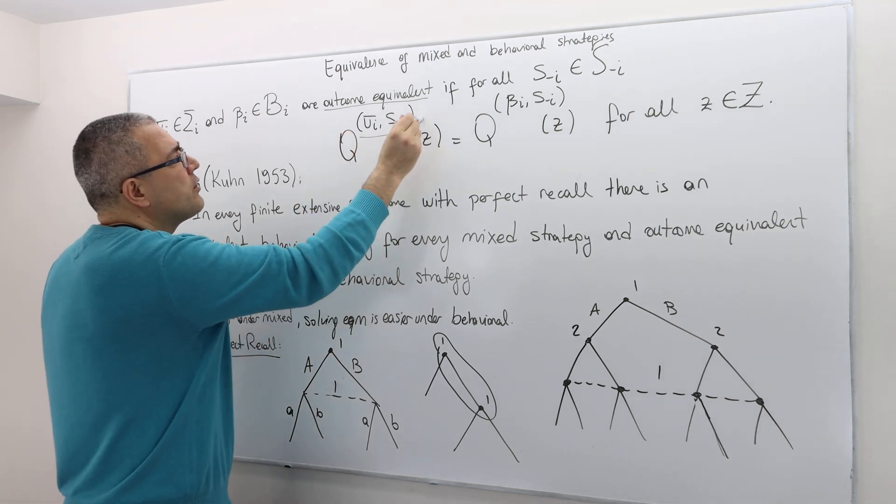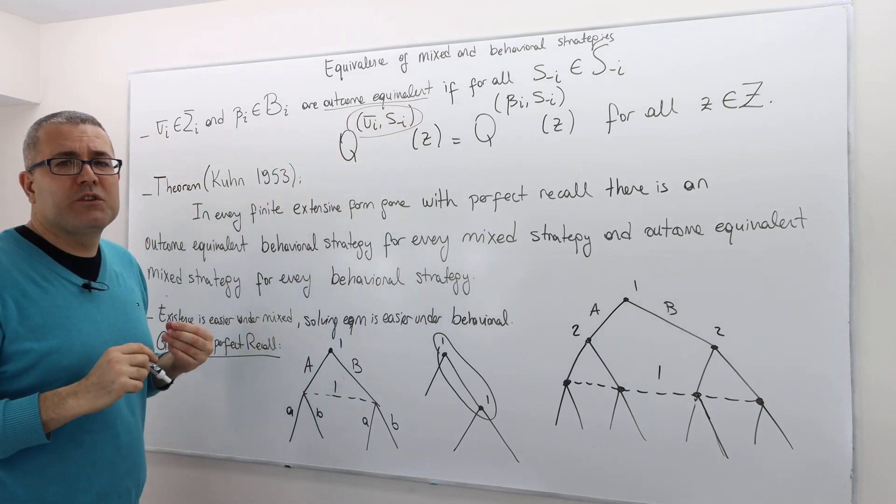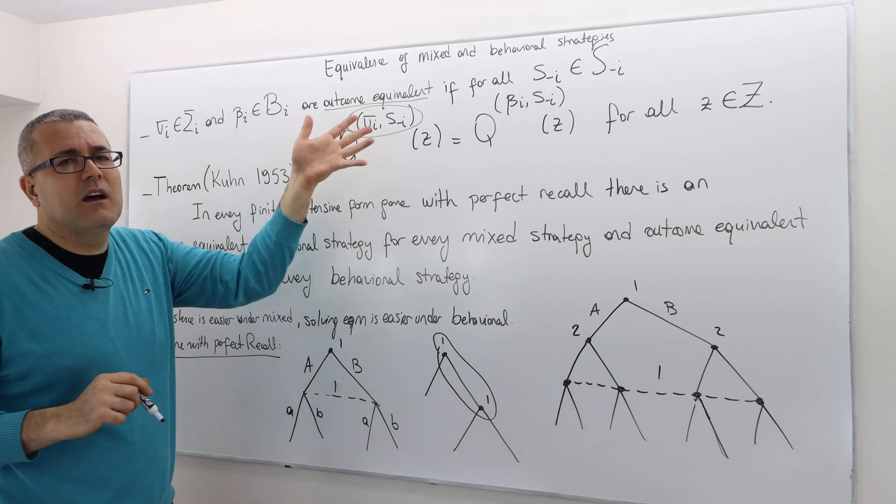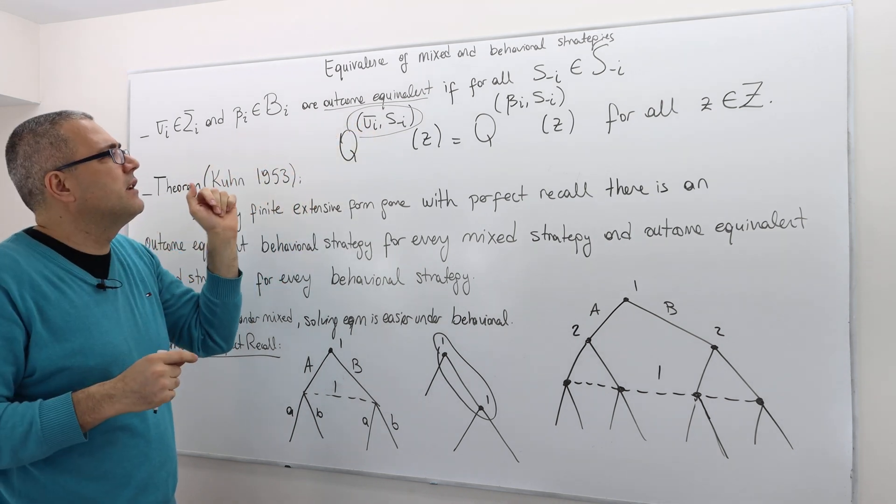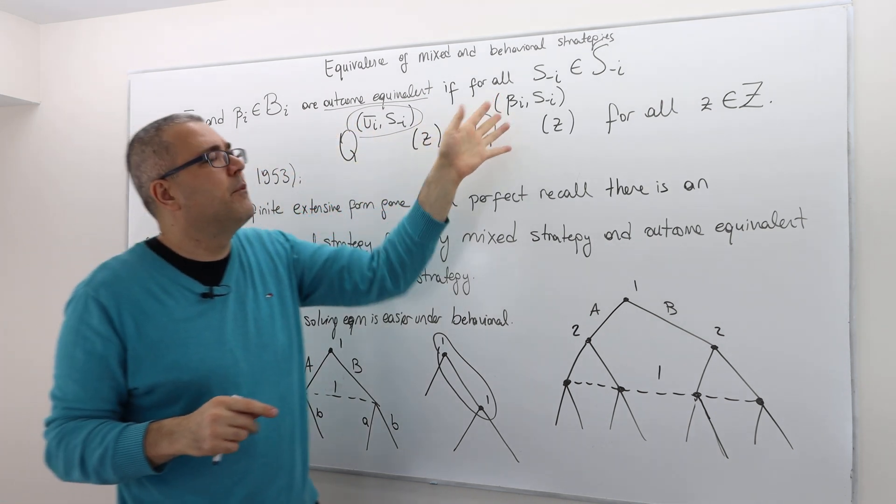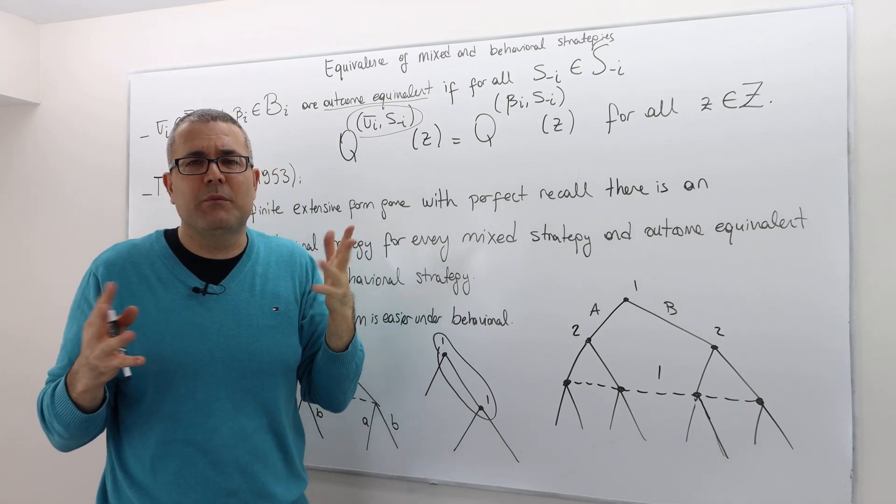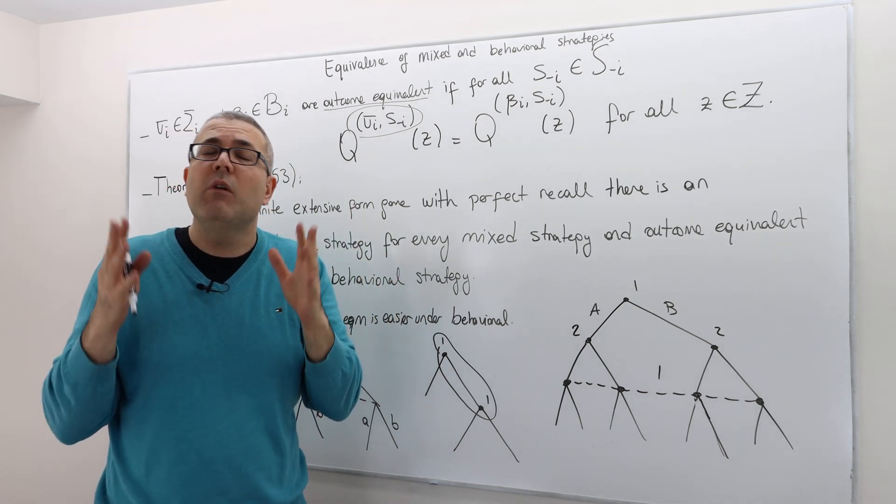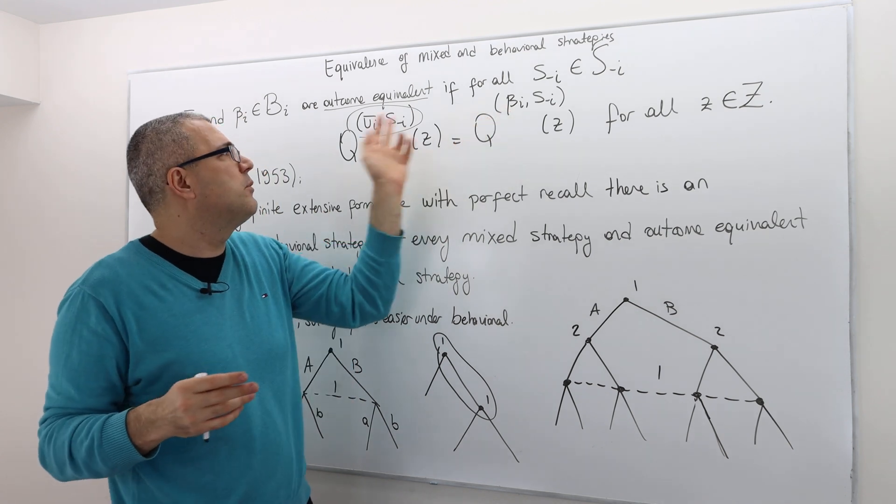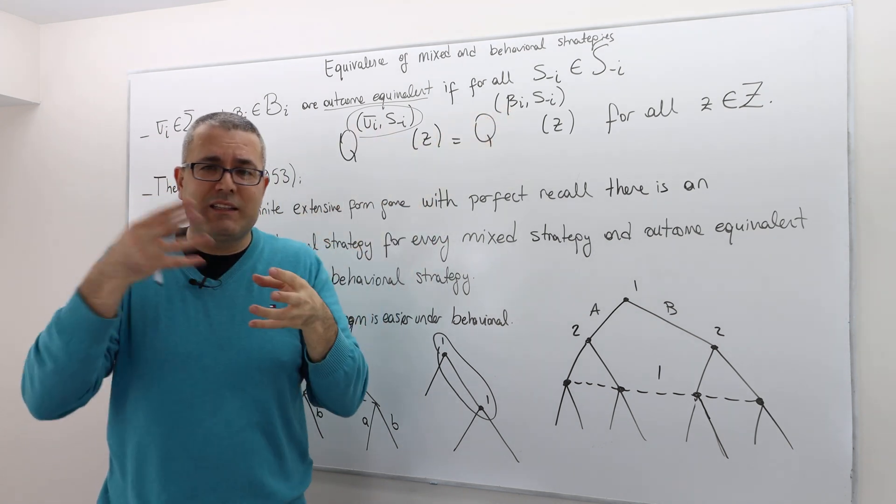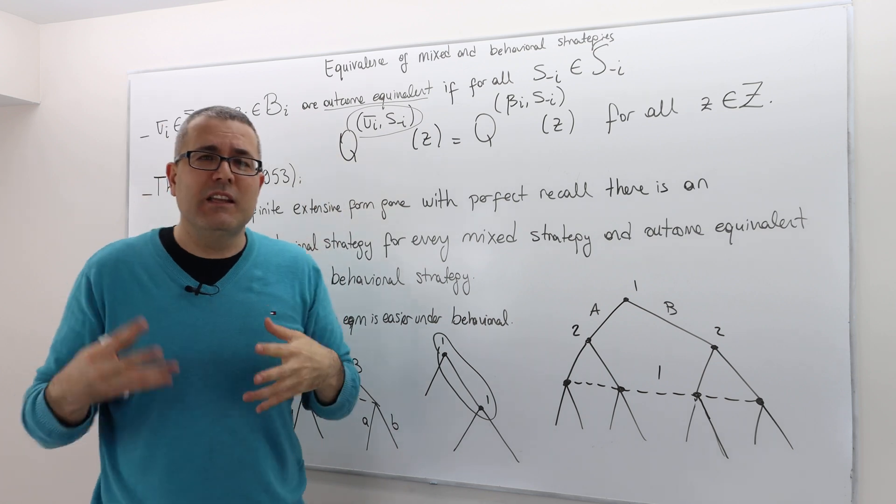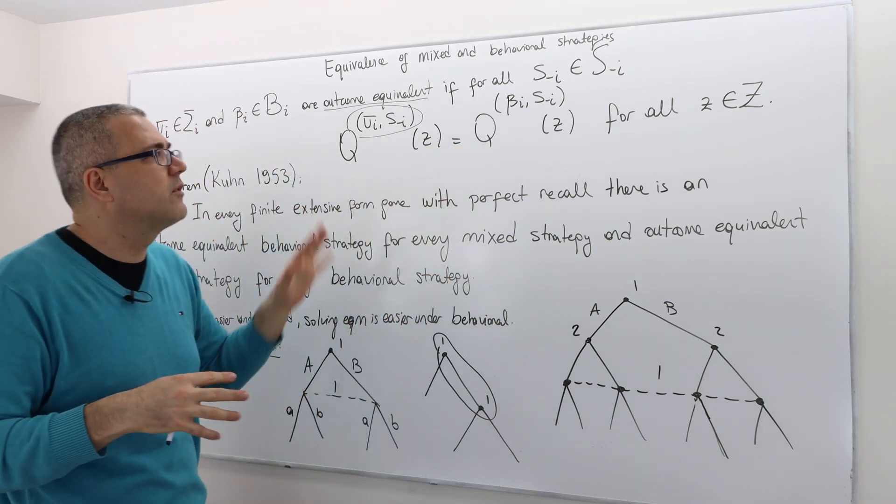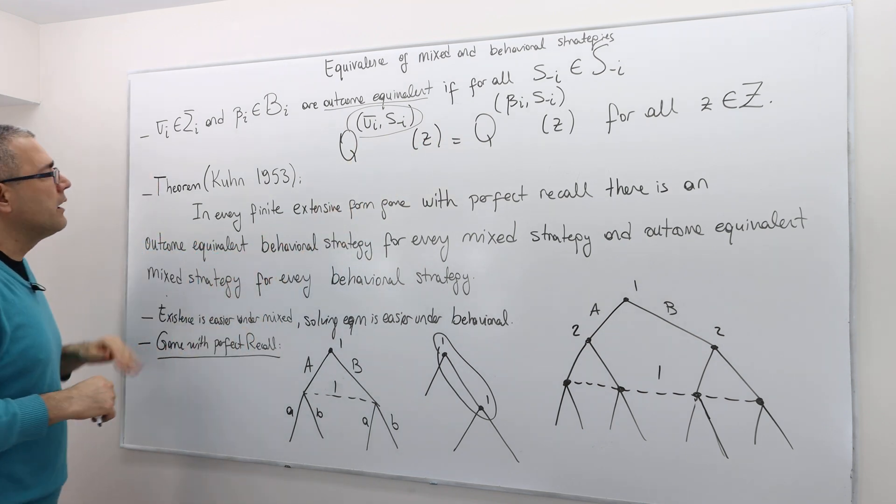Here, you may wonder, what type of strategy is this? It is mixed and pure strategy here, behavioral and pure strategy. It's some sort of a hybrid strategy profile. Can we do that? Well, yes. Don't forget those probabilities that beta I and sigma I induce. They're independent of the other player's strategies. So therefore, we can calculate those likelihoods.